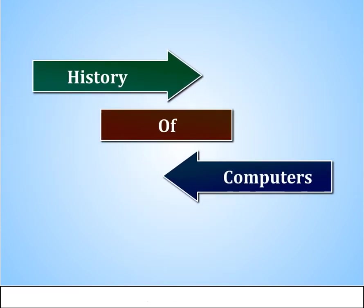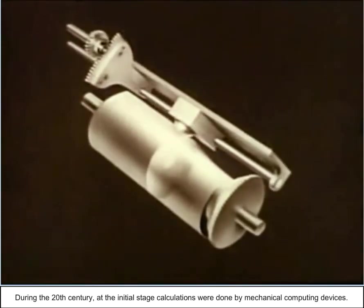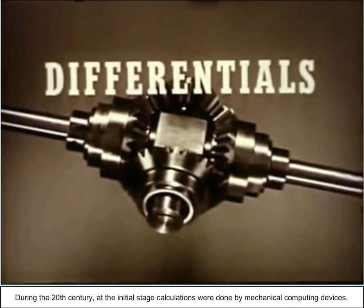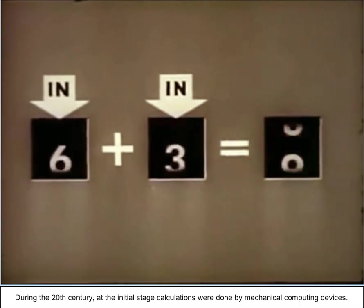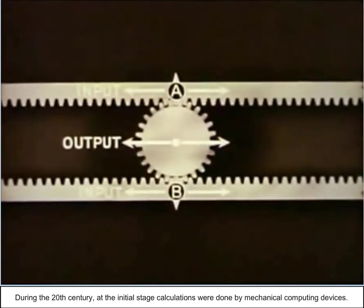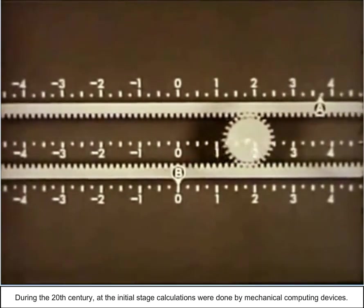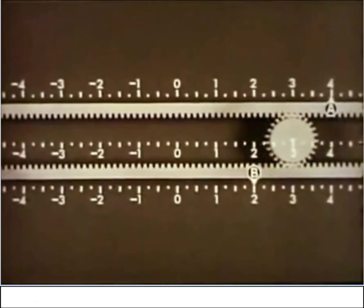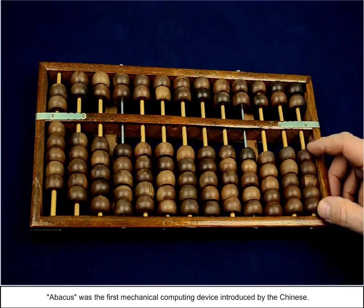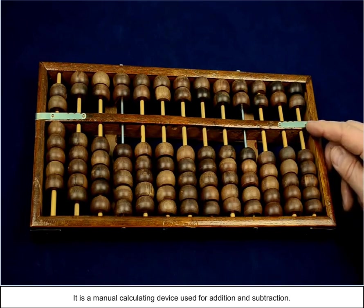History of Computers. During the 20th century, at the initial stage, calculations were done by mechanical computing devices. Abacus was the first mechanical computing device introduced by the Chinese. It is a manual calculating device used for addition and subtraction.